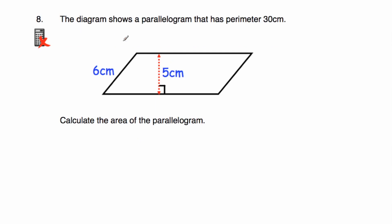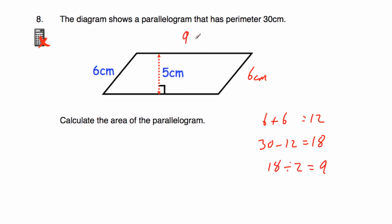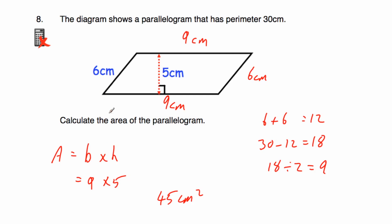Question number eight: the diagram shows a parallelogram with a perimeter of 30 centimeters. The left-hand side is six centimeters, so the right-hand side is also six centimeters. Six plus six is 12, so the other two sides together must total 30 minus 12, which is 18. Since they're equal, each is 18 divided by two, giving nine centimeters for both the top and the base. Now area equals base times height: nine times five equals 45 centimeters squared.